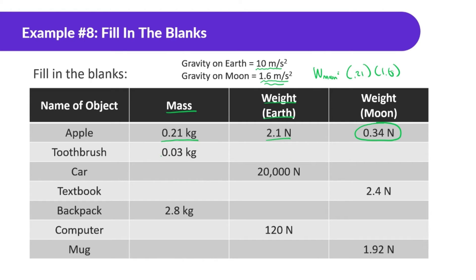A toothbrush has a mass of 0.03 kilograms, so the weight on Earth is going to be 0.3 newtons — just multiplying by 10. But for the moon, we do 0.03 times 1.6, and we get 0.048, so approximately 0.05 newtons.